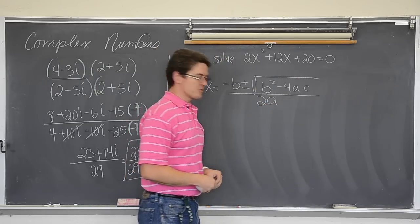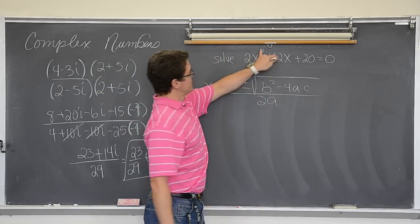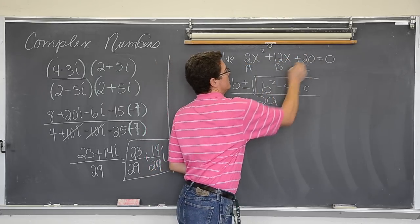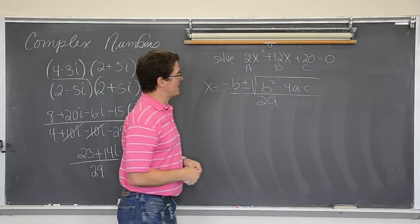Which is negative b plus or minus the square root of b squared minus 4ac all over 2a. Well when you have an equation solved for zero and your exponents count down, this is a, this is b, and this is c. So let's plug it in and see what happens.